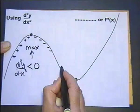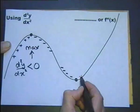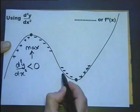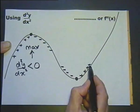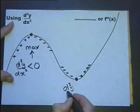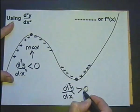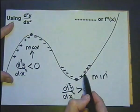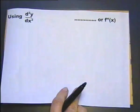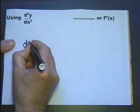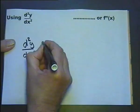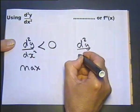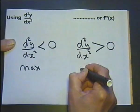Now let's look at a minimum point. The gradient coming in is negative and the gradient going out is positive. As x increases, the gradient is increasing. So d²y/dx² is greater than zero, and in this situation we have a minimum. The two key pieces of information to remember: d²y/dx² less than zero means a maximum; d²y/dx² greater than zero means a minimum.